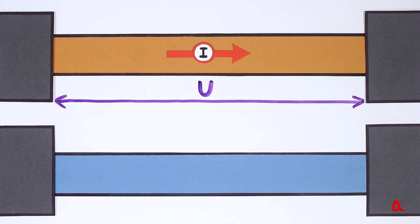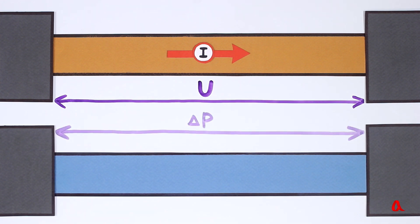It's like pushing water through a thin pipe with a lot of resistance. The greater the pressure difference at the ends of the pipe, the more water flows through it per unit of time.